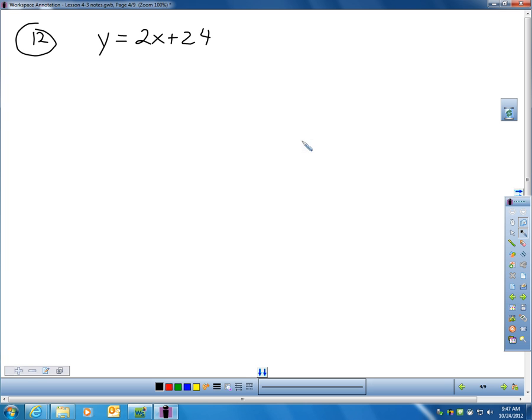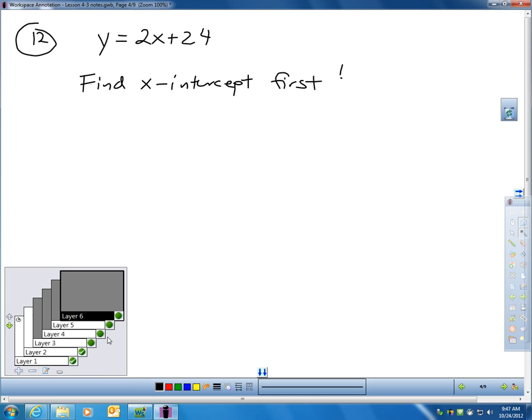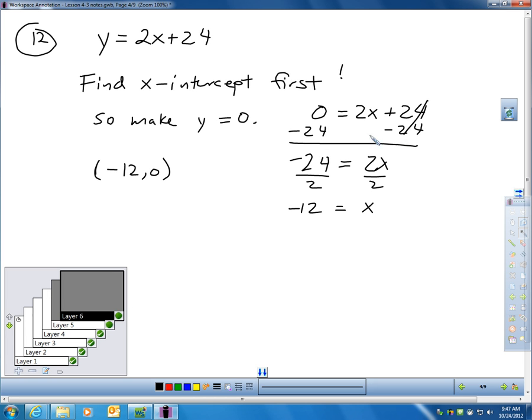If you go to question 12, here's another. We'll do one more sample. Let's get the X intercept first. Well, to find the X intercept, remember, I've got to plug in 0 for Y. So if I plug in 0 for Y, I get 0 = 2x + 24. I've got to find out what x is. So I'll take away 24 from each side, which leaves me 2x = -24. I can then divide by 2. I just found out x is -12.